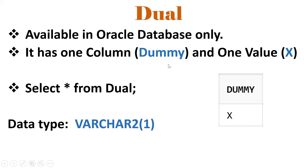This is very, very important from an interview perspective. DUAL is a special Oracle table. It has only one column, DUMMY, with value X, data type VARCHAR2, and data size 1.